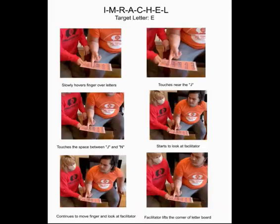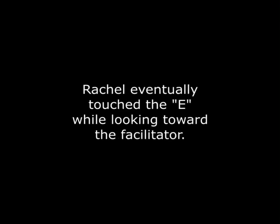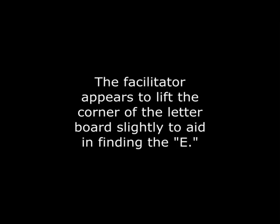Rachel seemed to have trouble finding E. She slowly hovered over the letters, touched near J, then in the space between J and N, before looking at the facilitator, presumably for assistance. Rachel eventually touched the E while looking toward the facilitator. The facilitator called out E once. The facilitator appears to lift the corner of the letterboard slightly to aid in finding the E.